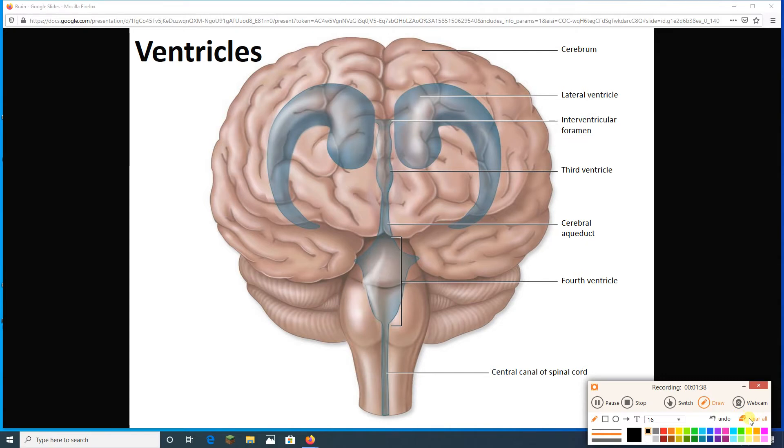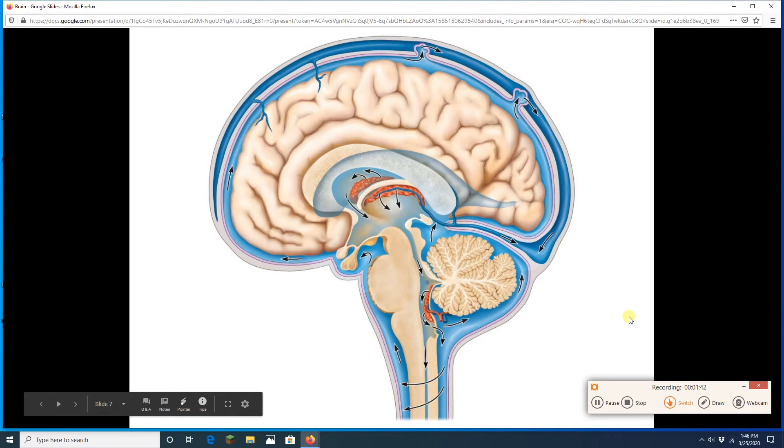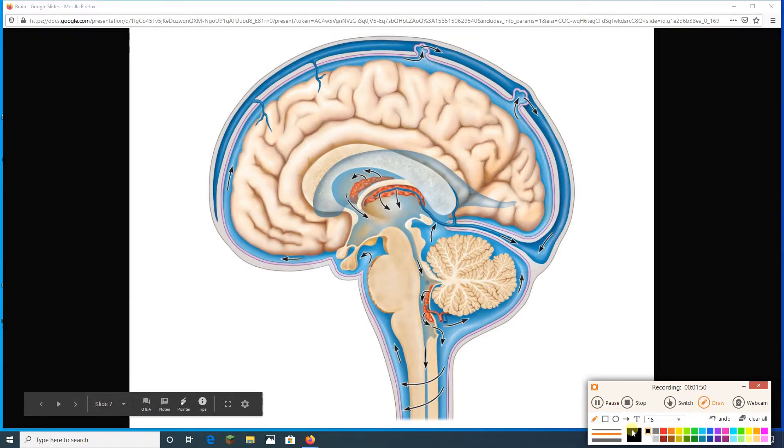And that passageway is known as the cerebral aqueduct. All right, let's look at a few more views of our ventricles. This is kind of like the picture we saw earlier, a little bit different.